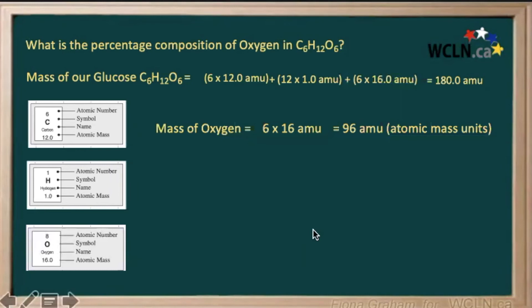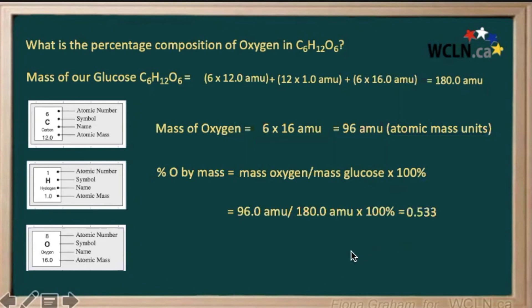So now to get our percentage, we need to calculate and compare this mass of our oxygen to the mass of our whole glucose, and then multiply that by 100% so that it's written as a percentage. So 96 divided by 180 is equal to 0.533. When you multiply that by 100, you get 53.3%.